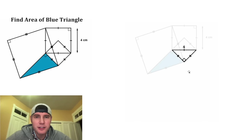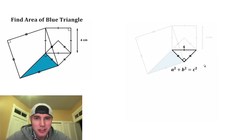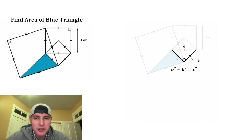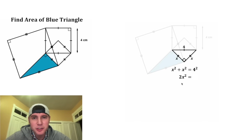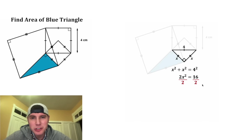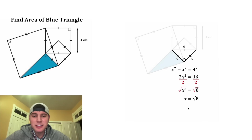Then I wanna focus on this triangle. This is a right triangle, so we know that we can use the Pythagorean theorem. So a squared plus b squared equals c squared, and these two sides are equal to each other, so let's call them both x. So x squared plus x squared equals four squared. That gives us two x squared equals 16, and after dividing both sides by two, x squared equals eight. After square rooting both sides, x equals the square root of eight. So let's update both of these x's to square root of eight.